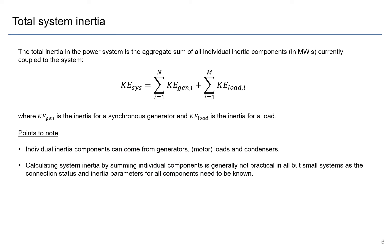So far we've talked about inertia purely from a single generating unit perspective, but probably what's more interesting for us is what is the total inertia in the power system. And this can be calculated as the aggregate sum of all the different inertial components that's currently connected to the system, and in general theoretically this is the sum of all synchronous generators in the system as well as all the synchronous loads in the system. So inertial components can come from synchronous generators, synchronous motor loads, as well as synchronous condensers.